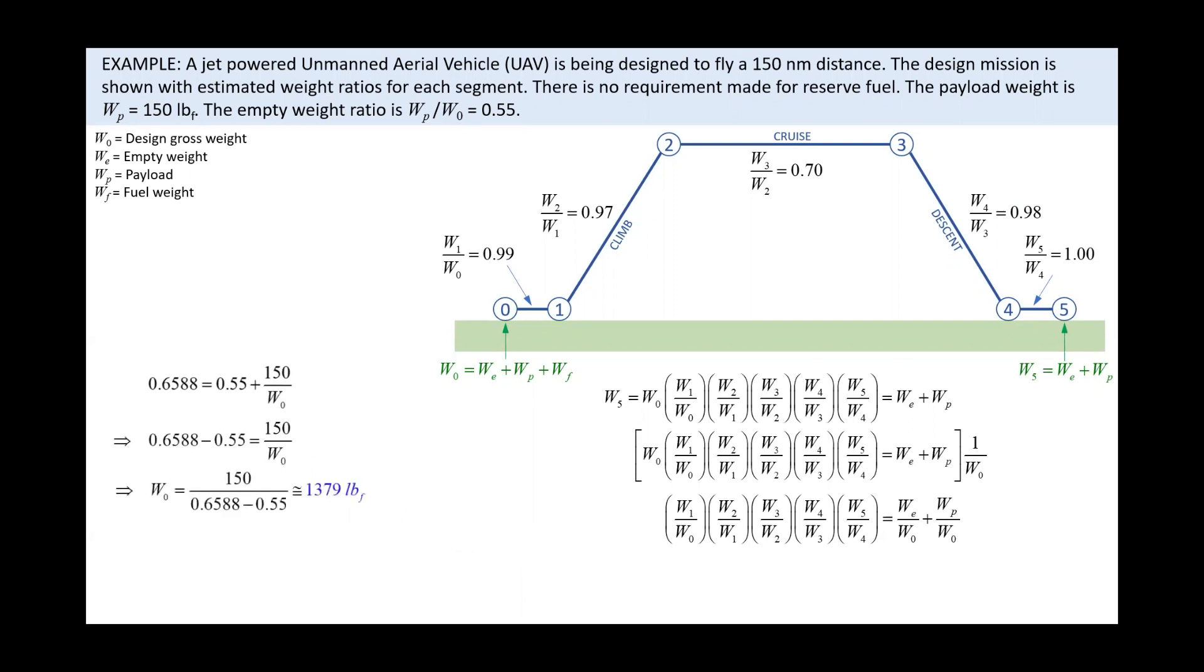Solving for W0 shows that the gross weight of our UAV should be 1379 pounds. Thus, we can calculate the empty weight by simply multiplying this weight by the empty weight ratio of 0.55. This gives an empty weight of 758 pounds.